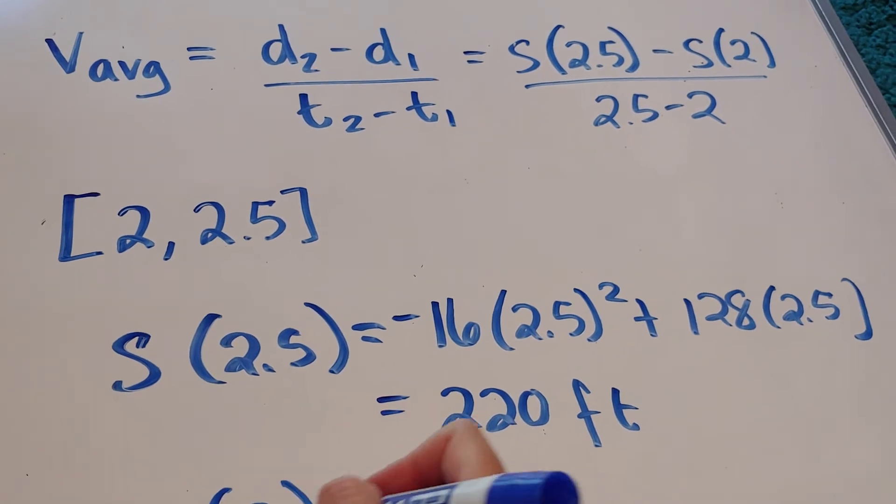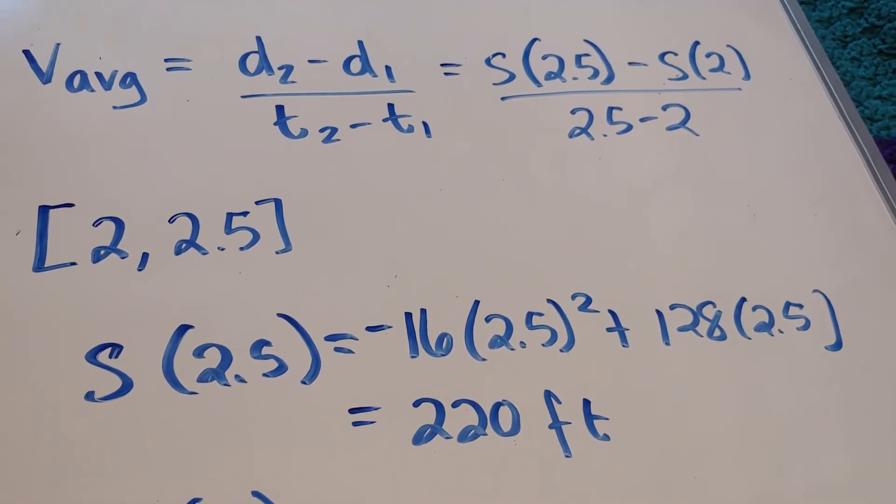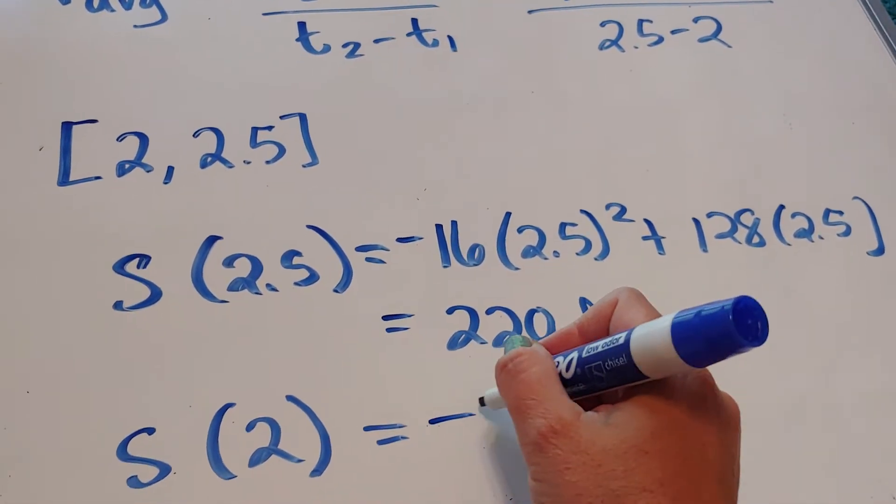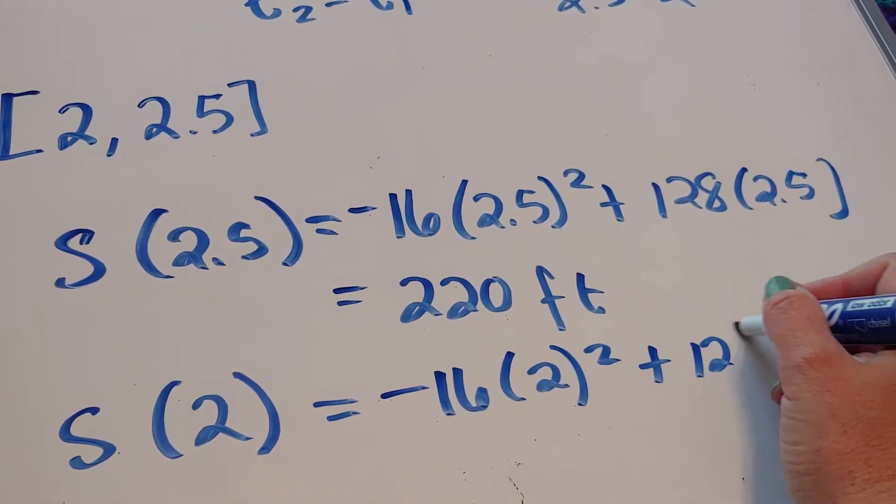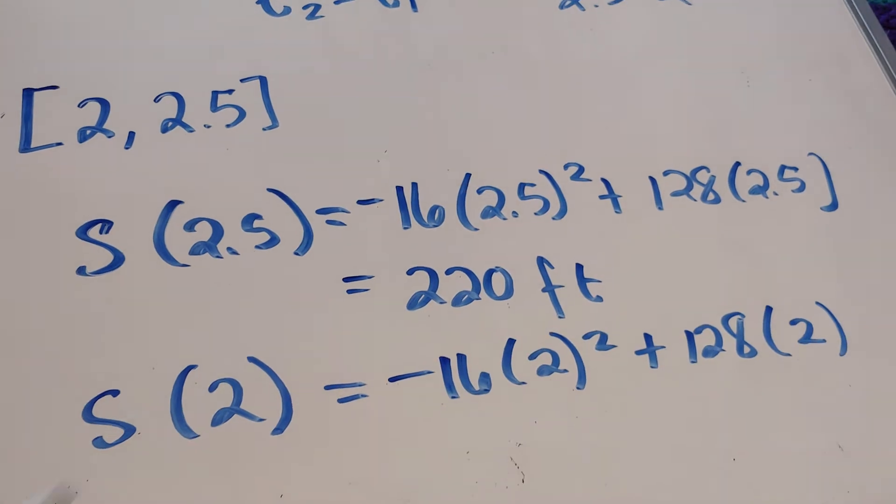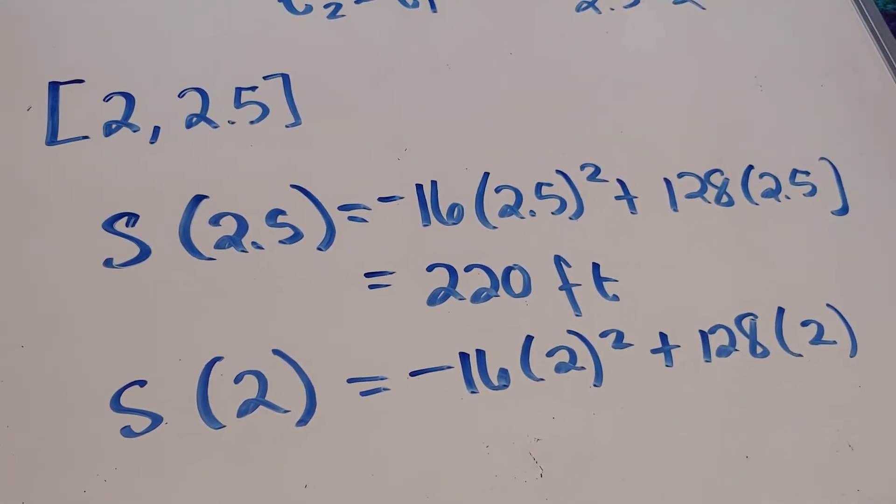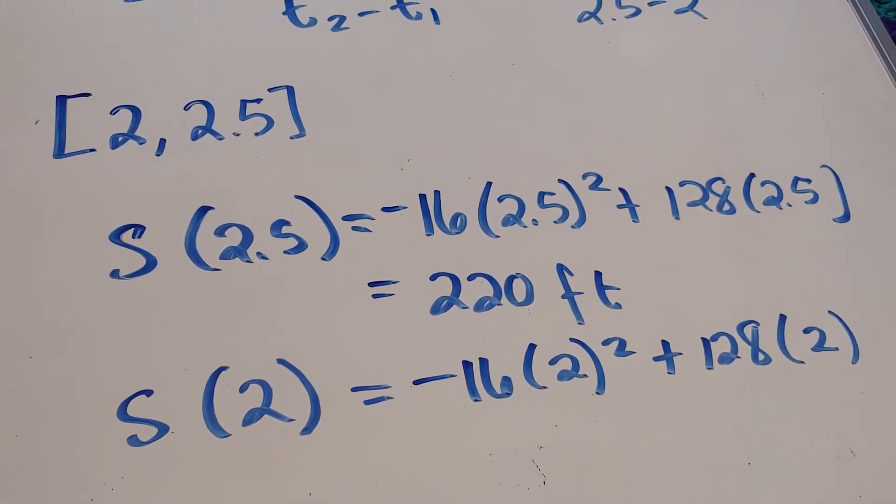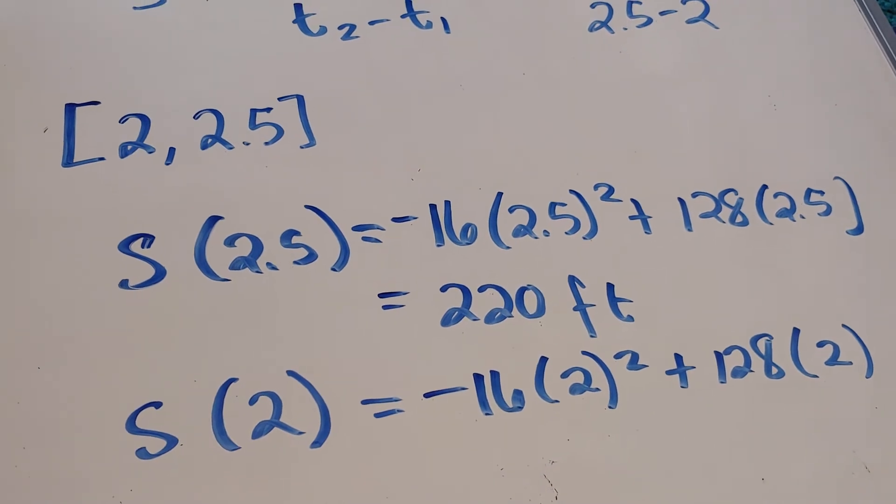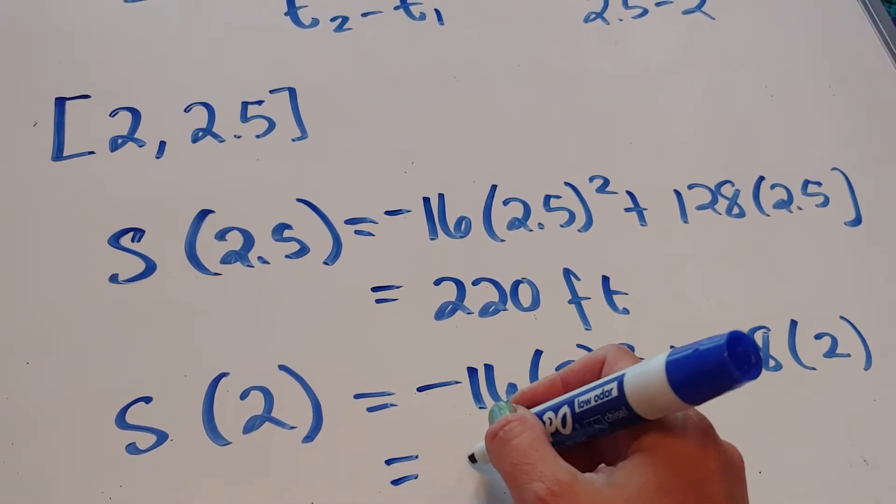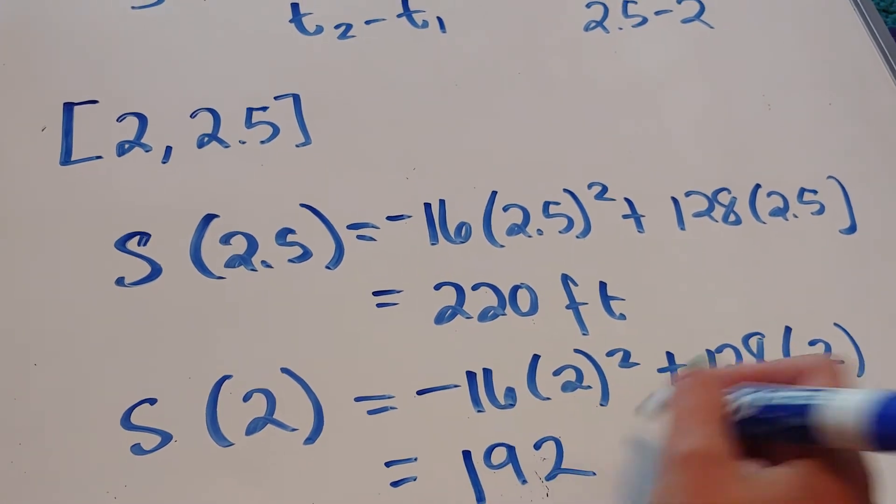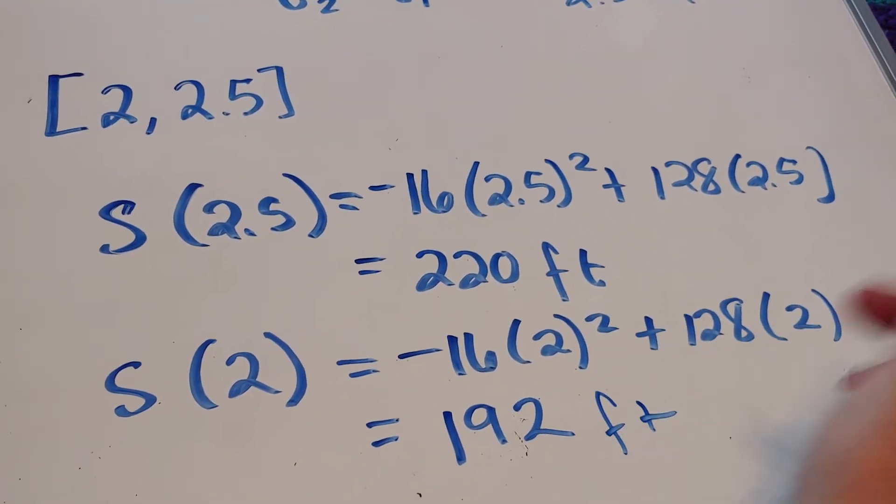Let's do it again for the number 2. So for the number 2, I'm going to plug in negative 16, 2 squared plus 128 times 2. And I get 192.